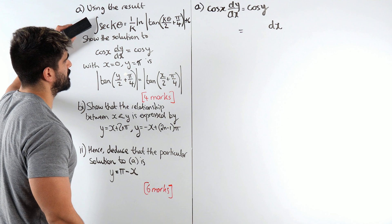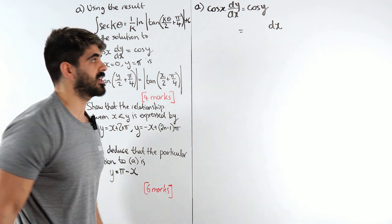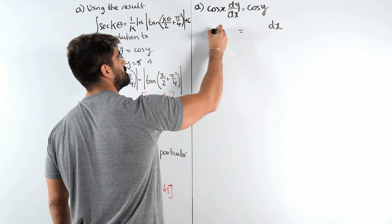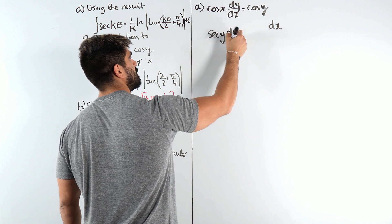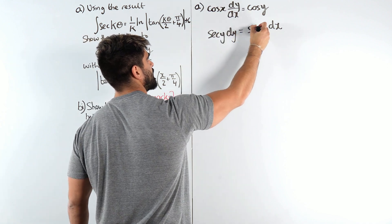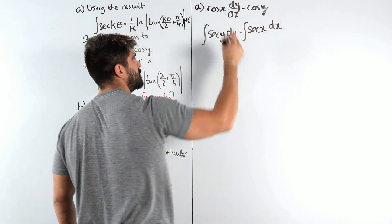When I divide by cos y I'm gonna get 1 over cos y but they've given us this on purpose because they want us to write it as sec. So this becomes sec y dy and then the cos x becomes sec x dx. And now we can integrate those.